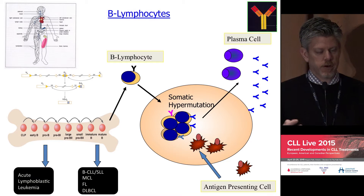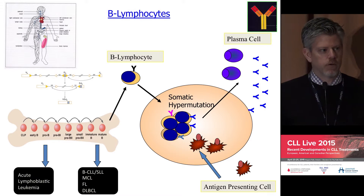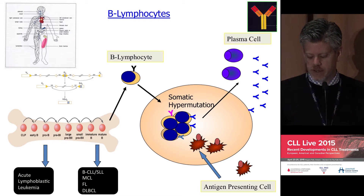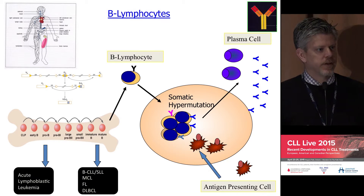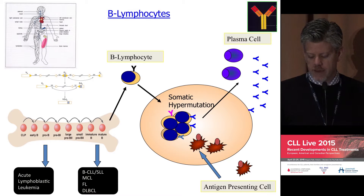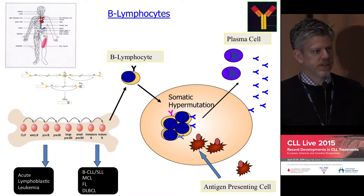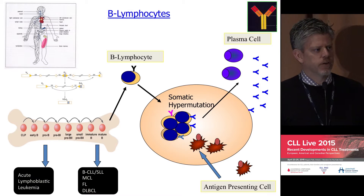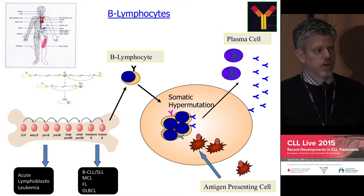Starting with the regular immune system and what normal B cells do — how they develop and what their role is. B lymphocytes undergo their differentiation and development in the bone marrow from a common stem cell or early lymphoid progenitor. During that development, B cells undergo a complex process of random selection of genes that go into developing a unique B cell receptor. Each B lymphocyte has its own surface immunoglobulin or B cell receptor.